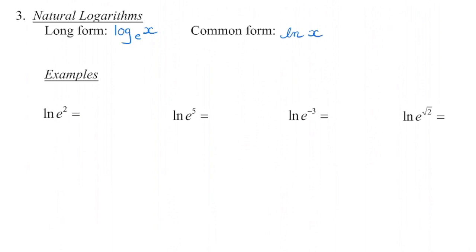We also have natural logarithms where the base is e — Euler's constant, that number 2.718, etc. Another way of writing log base e is to write LN. We pronounce this "lawn," just like the grass outside — it is the lawn of x. Every time you see ln, you need to know that's log base e. So if we're evaluating this one, what is the exponent on base e that gives us the value of e squared?